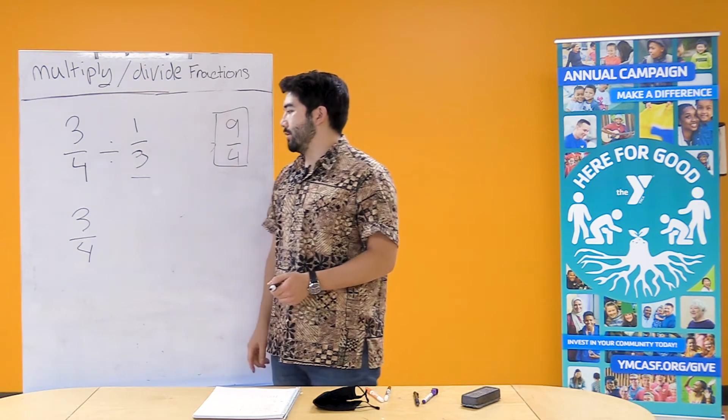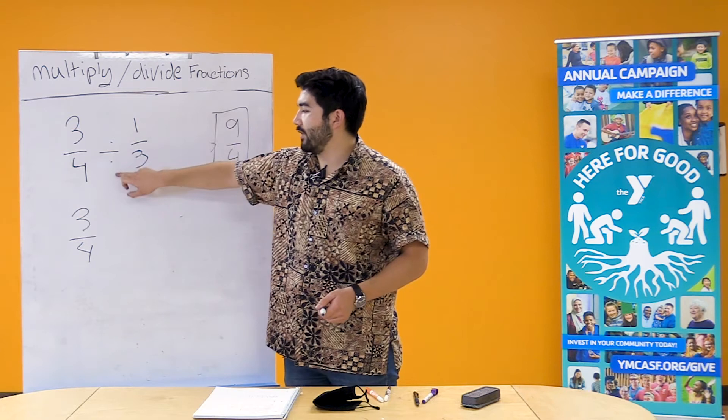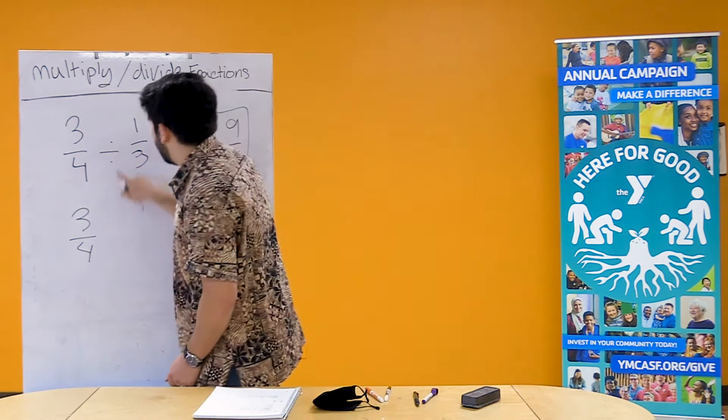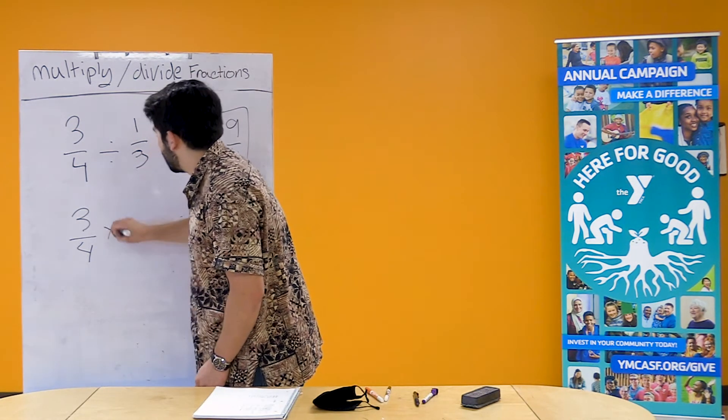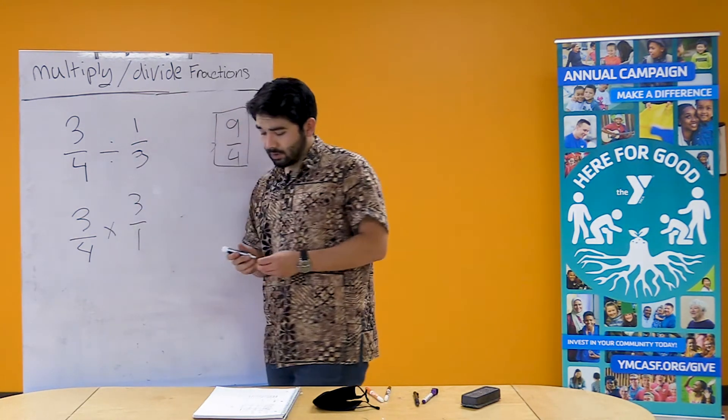we're actually going to first flip our second fraction and then change our divide to a multiply. So divide to multiply 3/4 times 3/1. Okay.